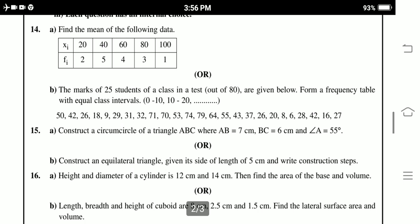Construct a circumcenter of the triangle ABC where AB equals 7, BC equals 6 and the angle A is 55 degrees. Construct an equilateral triangle given its side of length 5 cm. Write these construction steps.